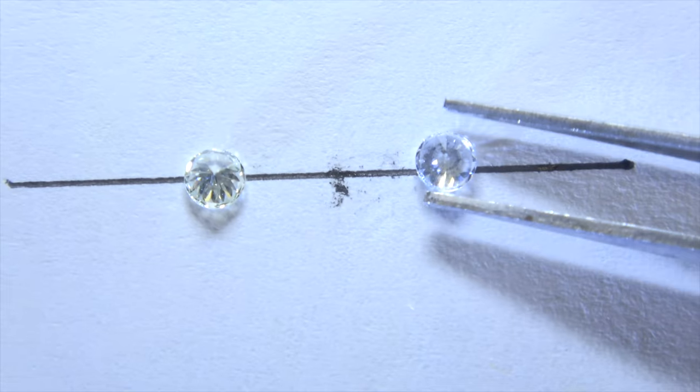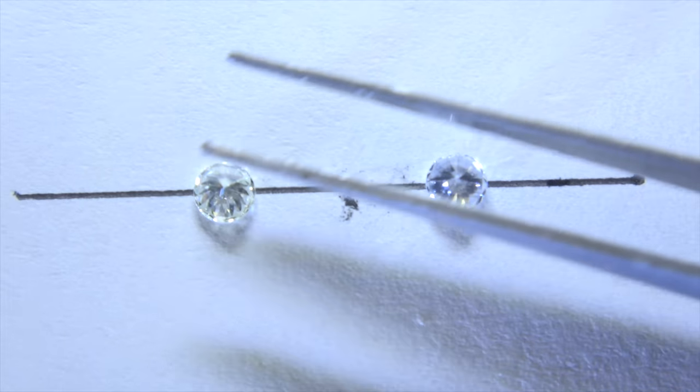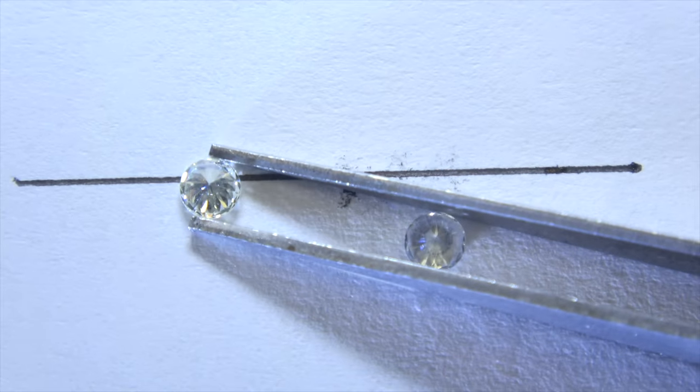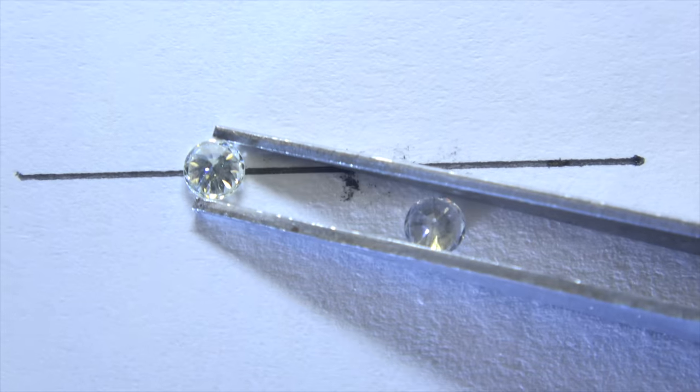And for diamond B, the black line underneath appears to be even less visible. Maybe just because diamond B is slightly tinted. It's very hard to tell.